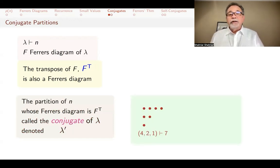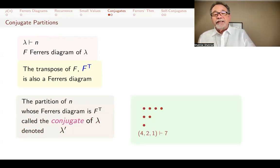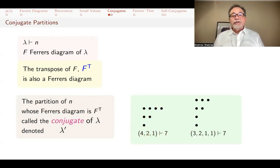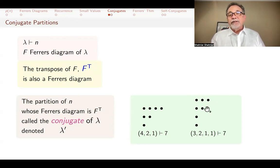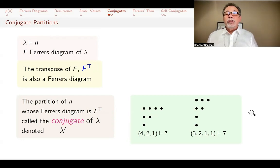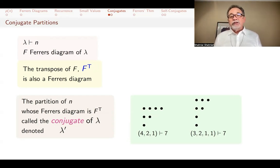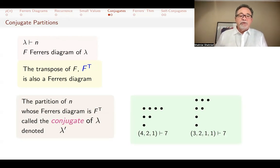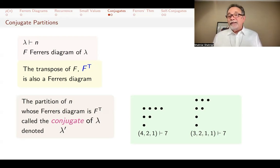For example, 4, 2, 1 partitions 7. If you transpose that, the first column has 3 rows, so that becomes 3; the second column has 2, becoming 2; then 1 and 1. So you get 3, 2, 1, 1 — a different partition of 7. These two partitions don't seem to have anything in common on the surface: one is into 3 parts, one is into 4 parts. But they are related because they are conjugates of each other.